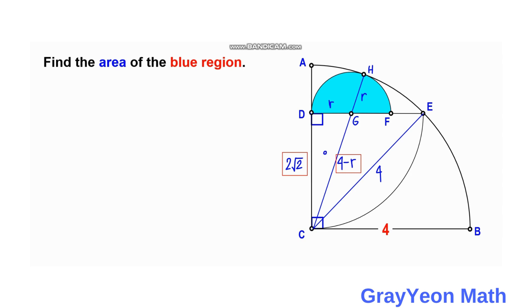Triangle DGC has the following legs: r and 2 square root of 2 and 4 minus r. We consider this other leg of this right triangle DGC and proceed with using Pythagorean theorem.